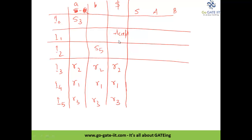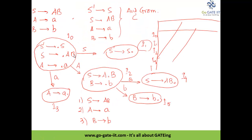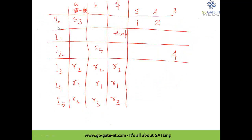For the goto entries we consider non-terminals. From I0 on S it moves to I1, so we put 1. From I0 on A it moves to I2, so we put 2. From I2 on B it moves to I4, so we put 4 under I2. These are called the goto entries, while the terminal-column entries are the SR (shift/reduce) entries.